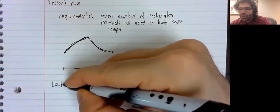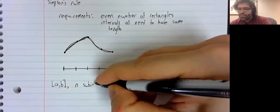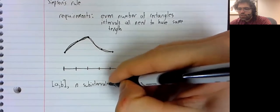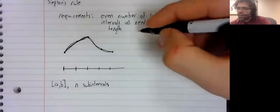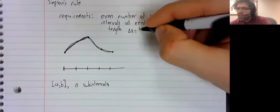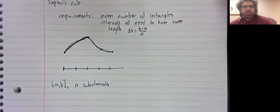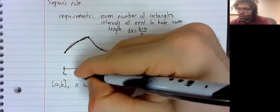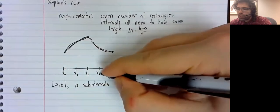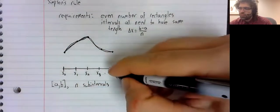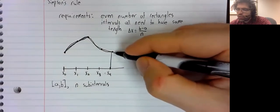We have an interval from A to B, and we're dividing it into n subintervals. This equal interval length is going to be delta x equals B minus A divided by n. And we'll call our intervals, or rather, the endpoints of our intervals, x zero, x one, x two, and so forth.